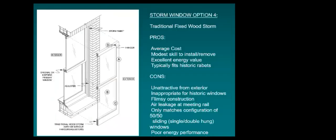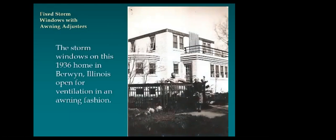A traditional fixed storm is the next step up — more appropriate for a historic home. These often had adjusters installed at the bottom that would kick them out if hinged at the top. Here's a good example on the second floor of a home in Berwyn, built in 1936, with storms on adjusters.